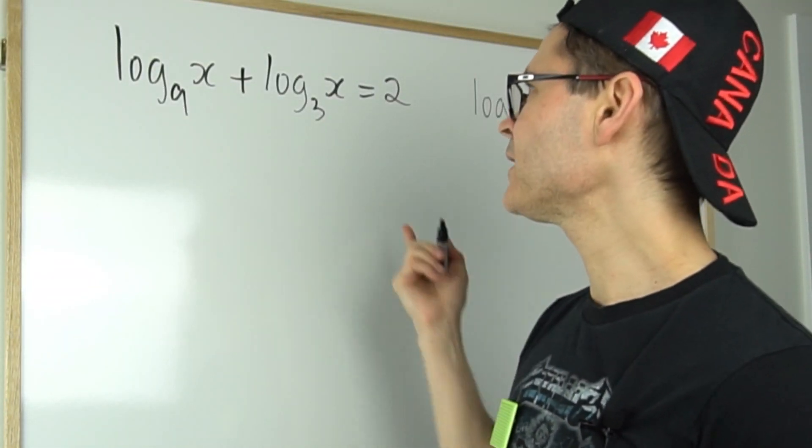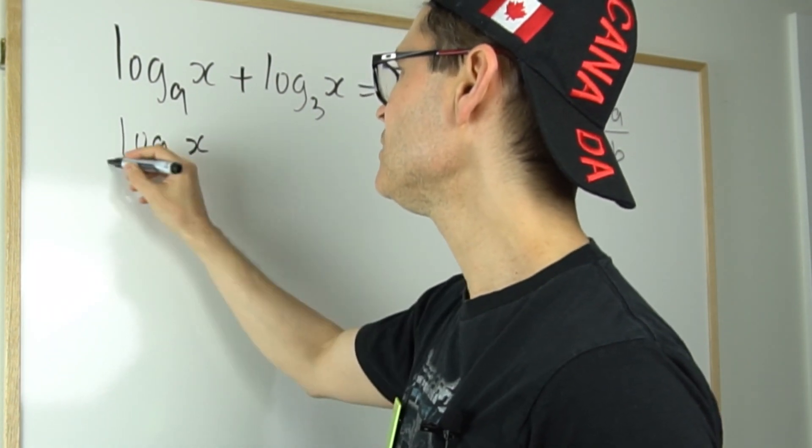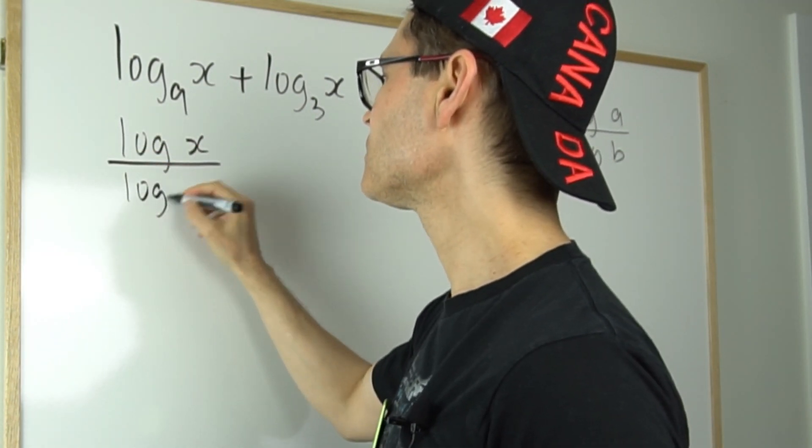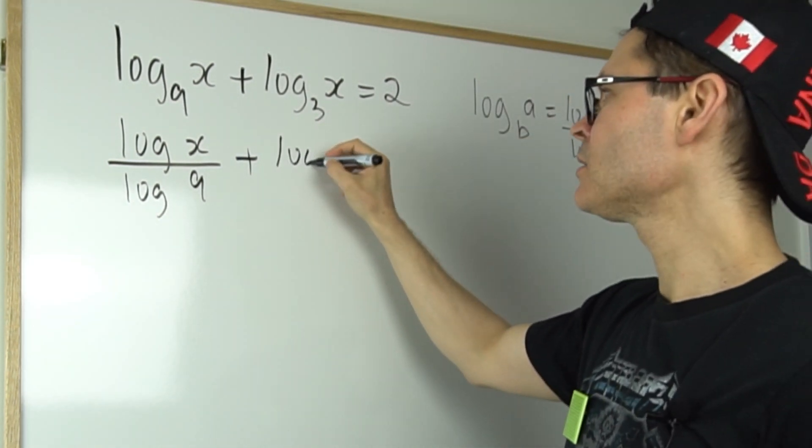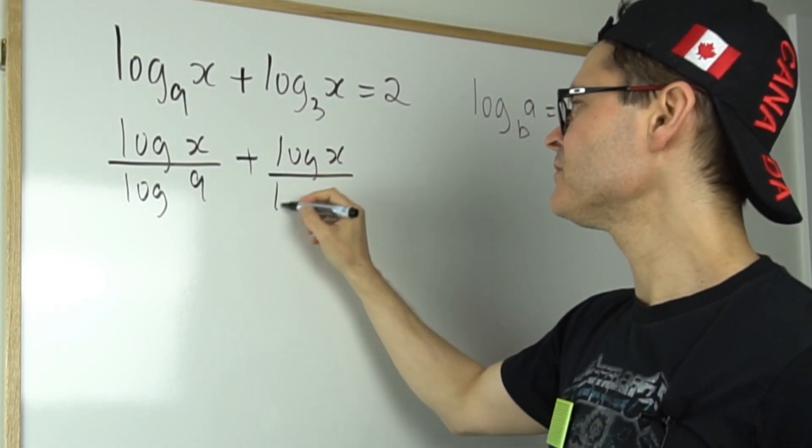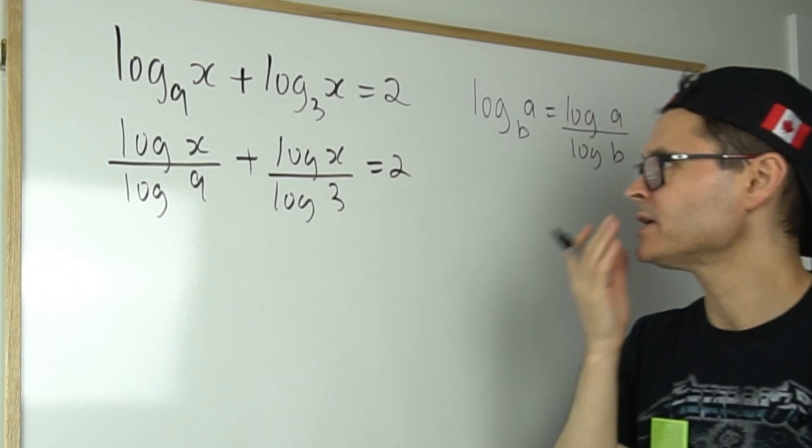So here what I could do is just apply that change of base identity for each of the logs. So the second one would be the log of X divided by the log of three, and then you can just keep the two there on the right side.